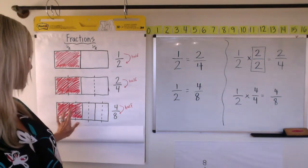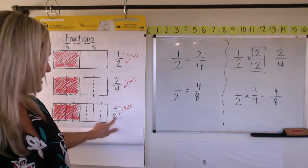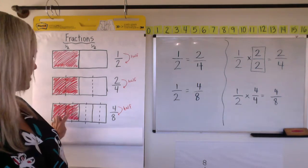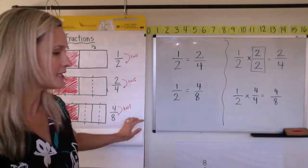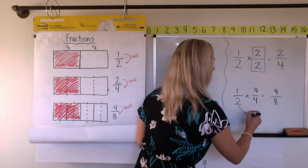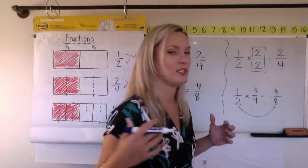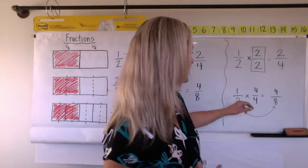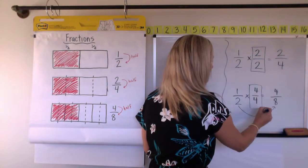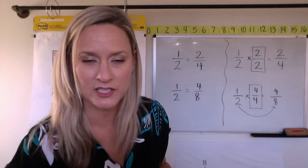And then you can see one, two, three, four, five, six, seven, eight pieces and one, two, three, four are shaded. So it's true. We can use a multiplication equation to generate equivalent fractions.